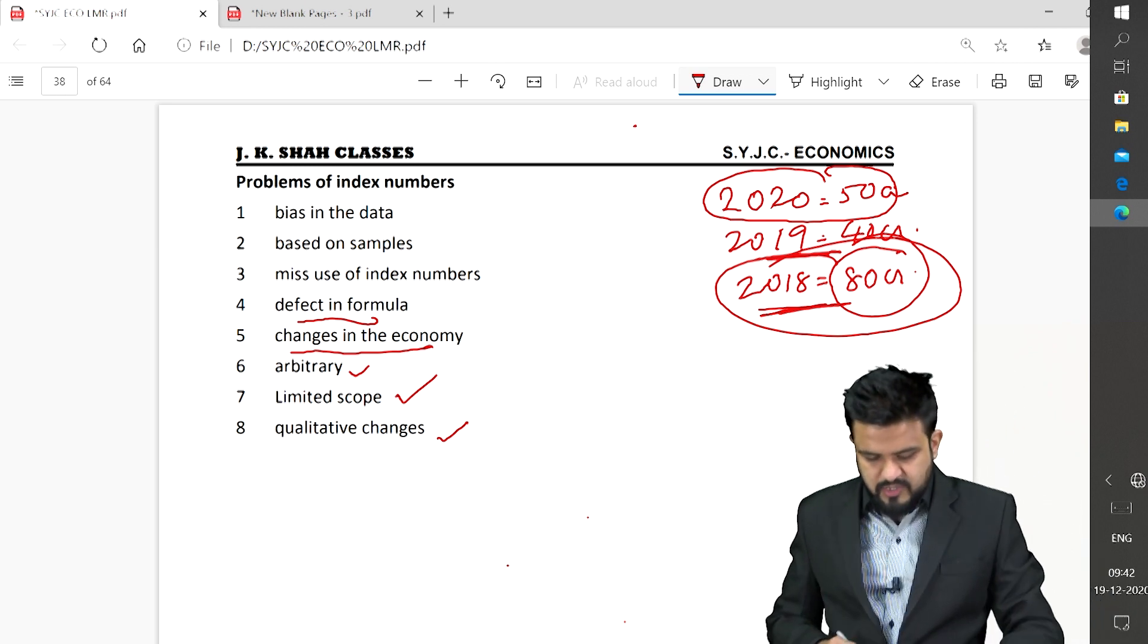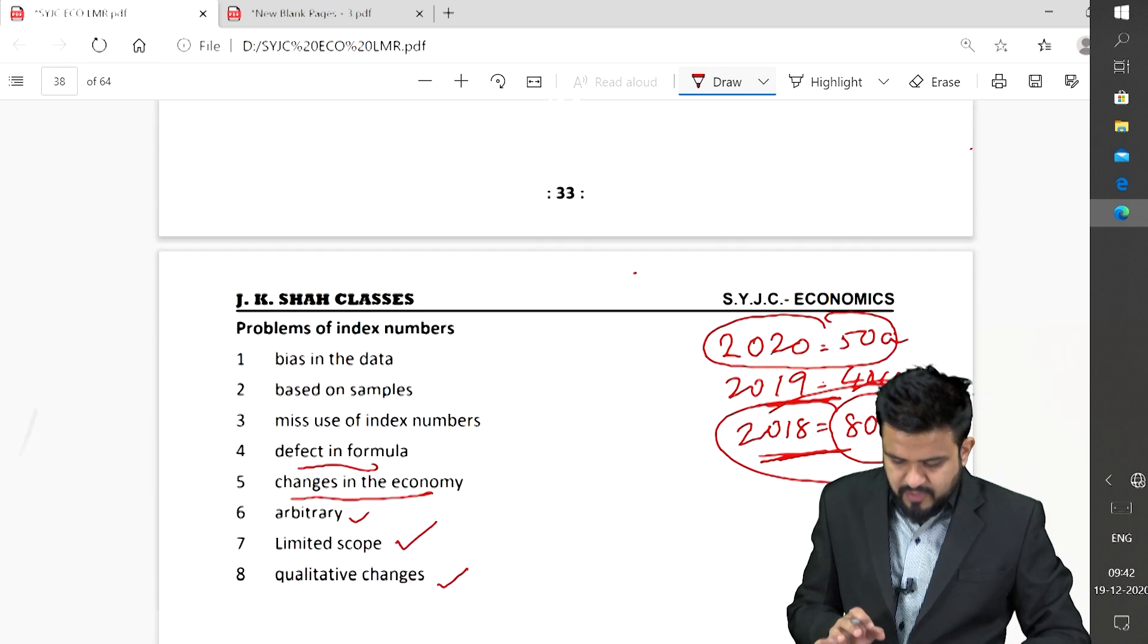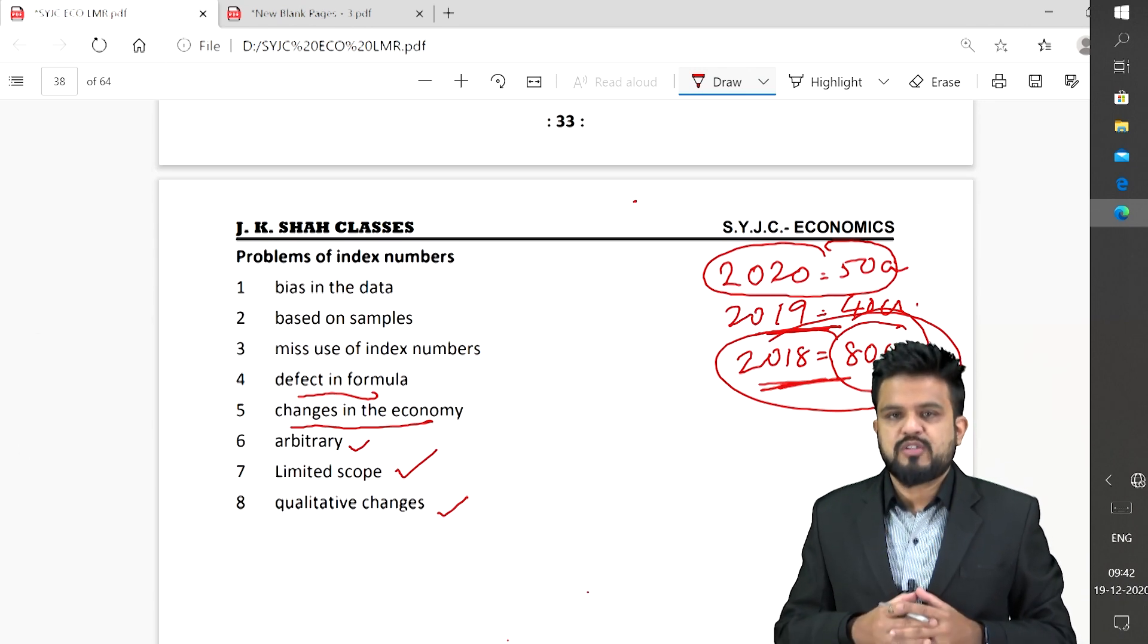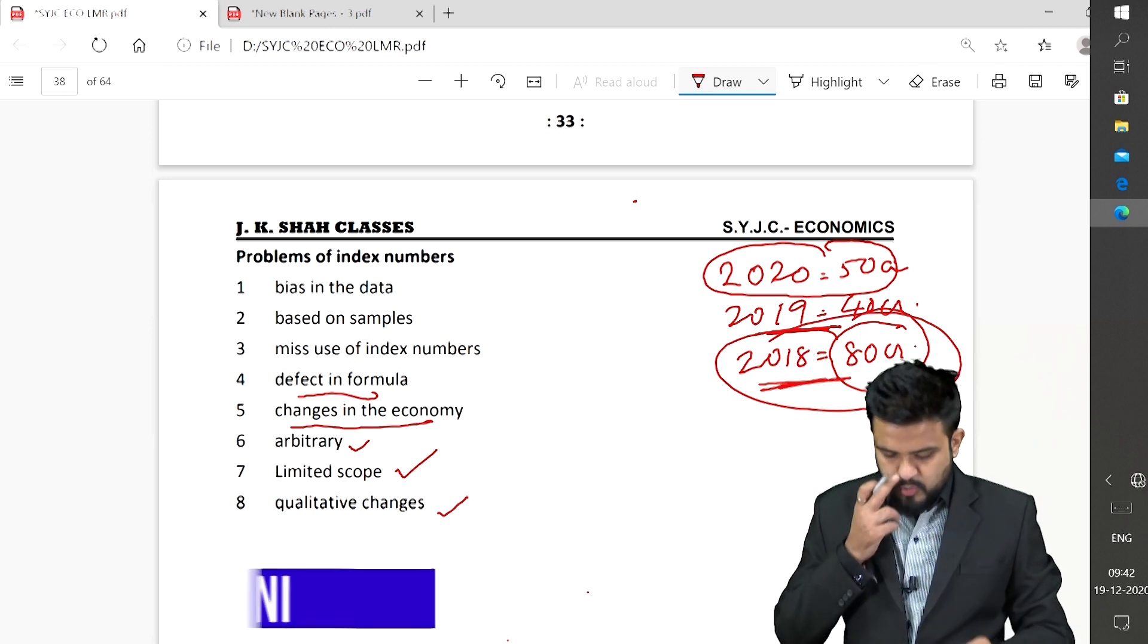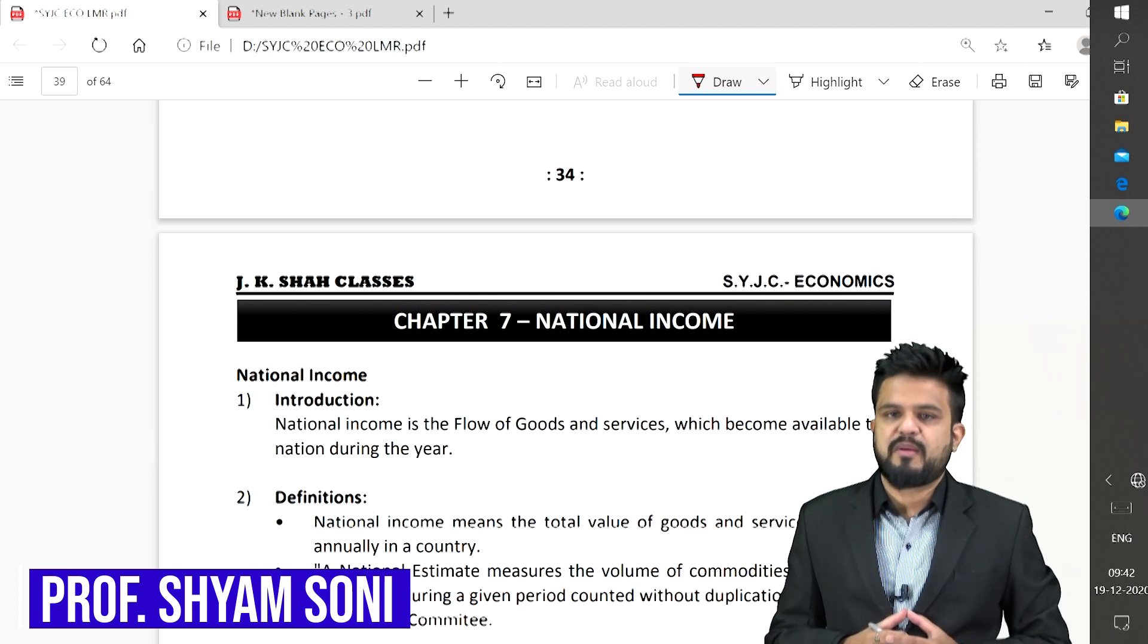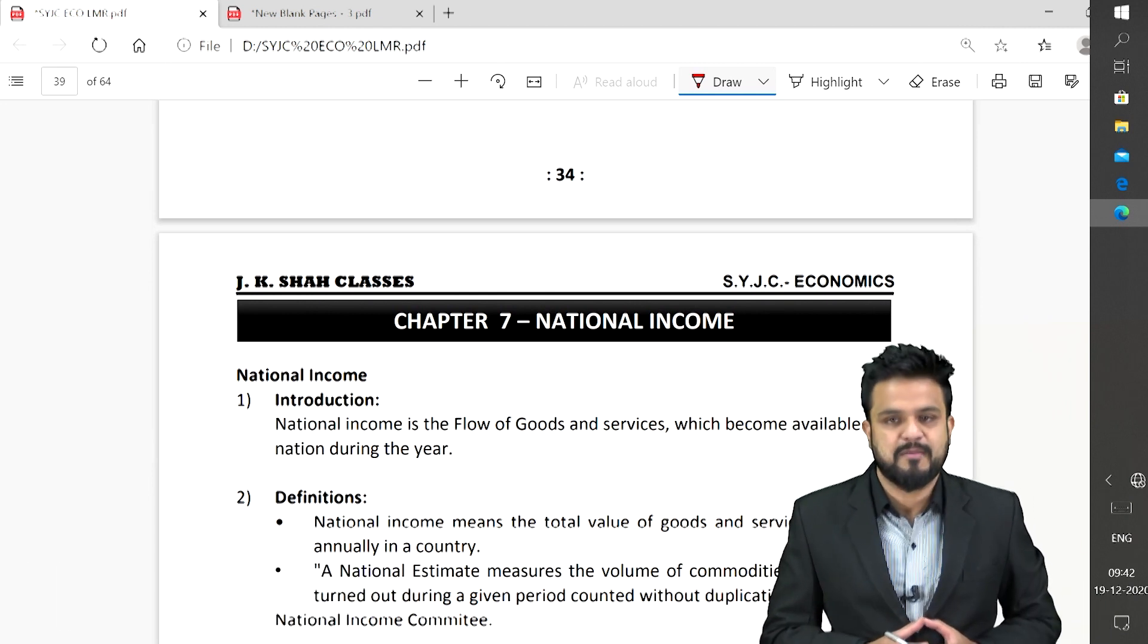Students, these were the main things in this chapter. It was just a quick revision, what all points, what all things you need to study. Index number is easy. Next video we will discuss chapter number 7, that is National Income. Thank you.